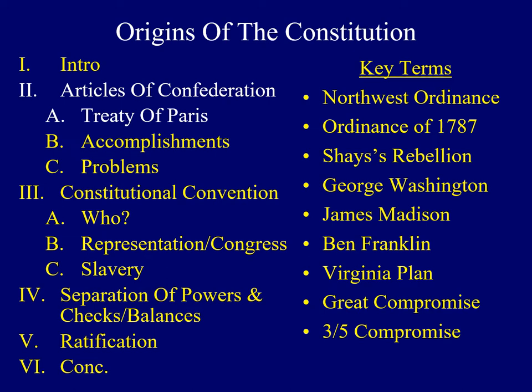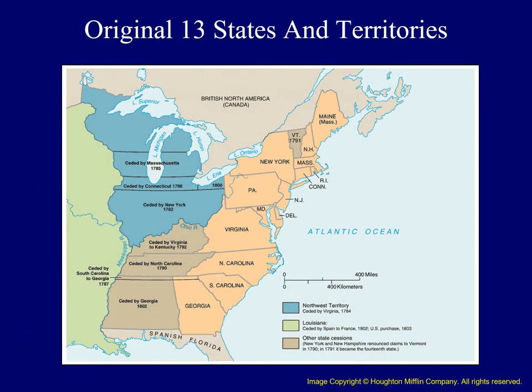We'll address the Articles of Confederation and the status of American territory as a result of the treaty which ended the Revolutionary War first. This map identifies the original 13 states and territories at the end of the American Revolution. Notice American territory does not simply end with the states along the Atlantic seaboard — American sovereignty extended all the way to the Mississippi River. The reason why the territory of the United States extended this far was due to the provisions of the treaty which ended the Revolutionary War.